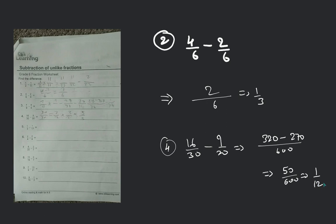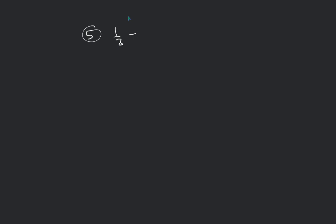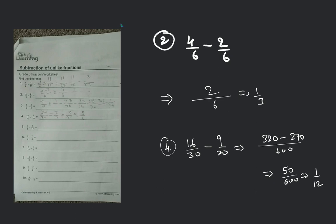Understood? Number 4 answer is 1 by 12. Going on to number 5 question: 17 minus 3 — that will be equal to 14 by 51. Your answer will be 14 by 51.